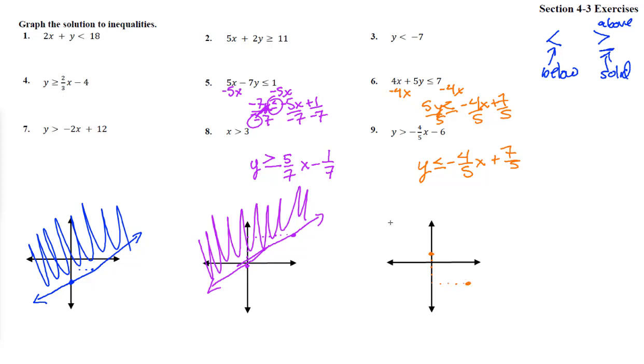And we'll notice that this has an equal sign here, which will make this a solid line. Okay, and y is less than. So we go from the line and down. So it's all this below the line is the answer.